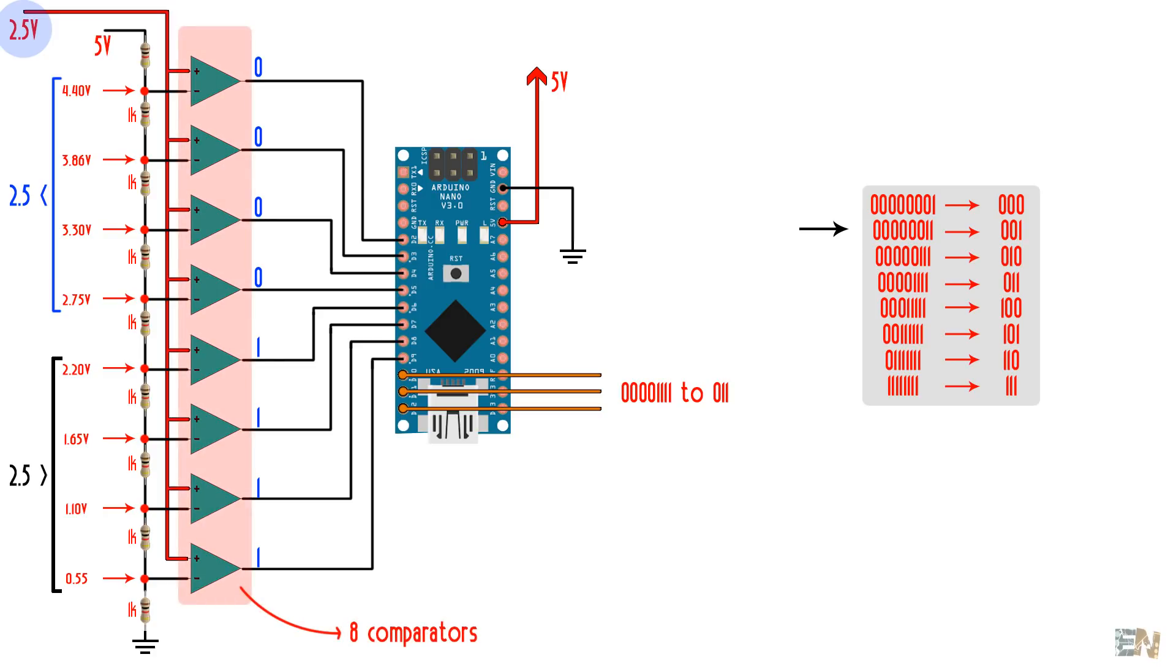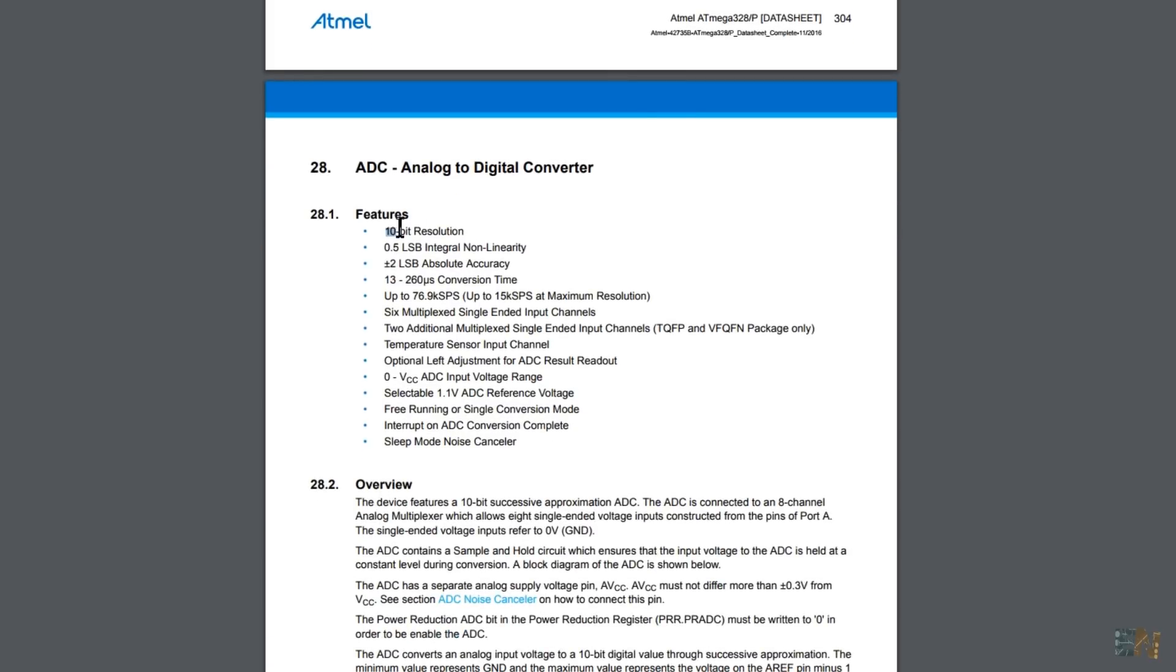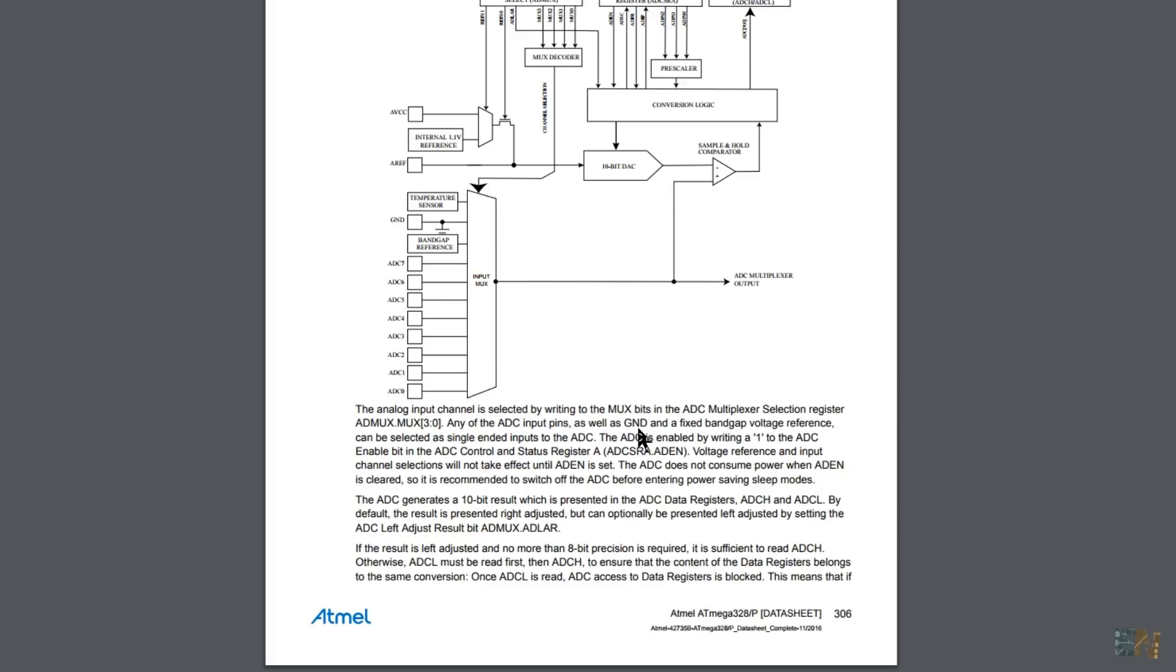As you can see, the amount of comparators will give us the resolution. With 8 comparators, we have a 3 bit ADC. With 16 comparators, we have a 4 bit converter. With 32, a 5 bit and so on. The ADC of the Arduino is a 10 bit one, so we could have 1024 values for a range of voltages between 0 and 5 volts. That gives us a step of only 4.8 mV, which is quite good.